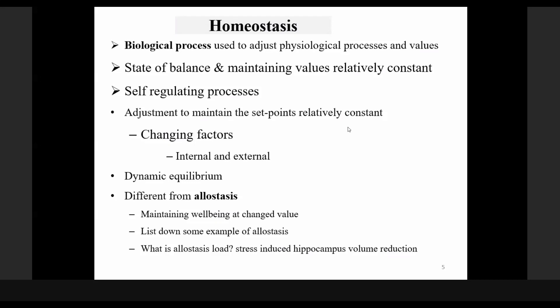Homeostasis means relatively constant — so what needs to be maintained constant? Those are the values of variables like body temperature, which needs to be maintained around 37 degrees centigrade, or our blood glucose level, which is another variable that needs to be maintained constant. Homeostasis is the process that tries to maintain the constancy of these parameters in our body.